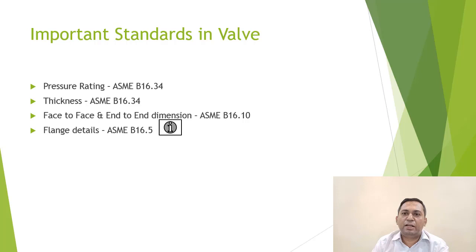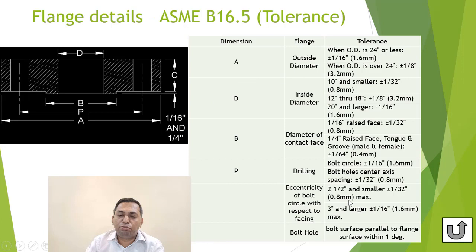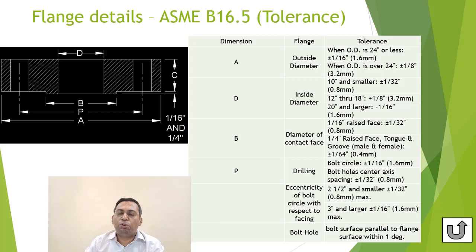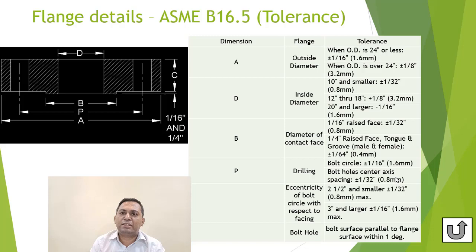Next is flange detail as per ASME B16.5. Different tolerances are given for parameters A, D, B, and P. If you are within these tolerances you don't need to go to the customer for any deviation. When preparing the die or mold pattern, ensure all these dimensions are followed. For sand casting, as-cast holes may not be possible, but for investment casting you can have as-cast holes following these dimensions. If you are not confident about maintaining these tolerances, go for blind holes and then drill to the required tolerances.